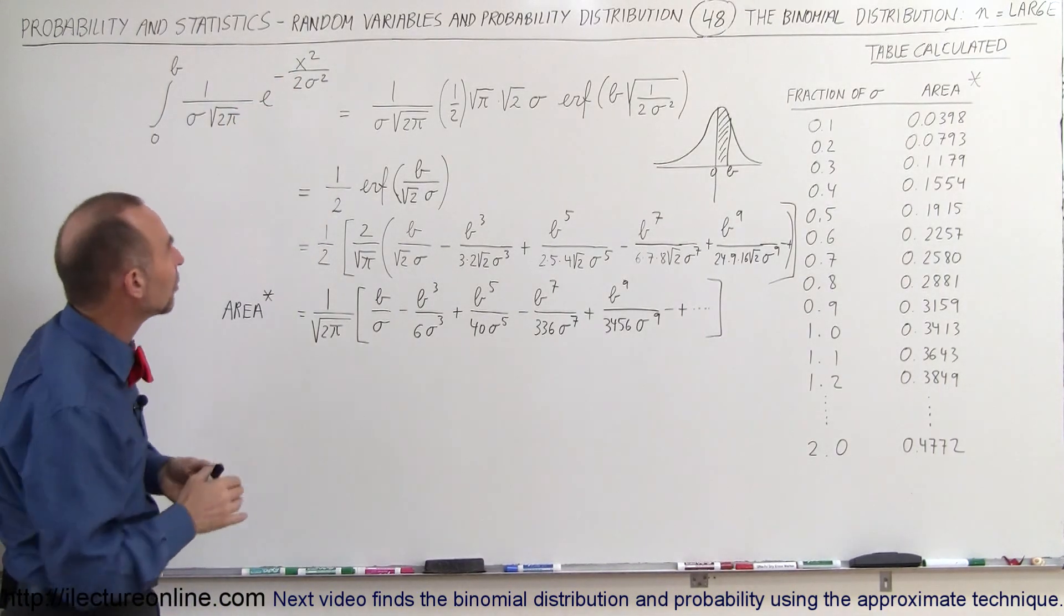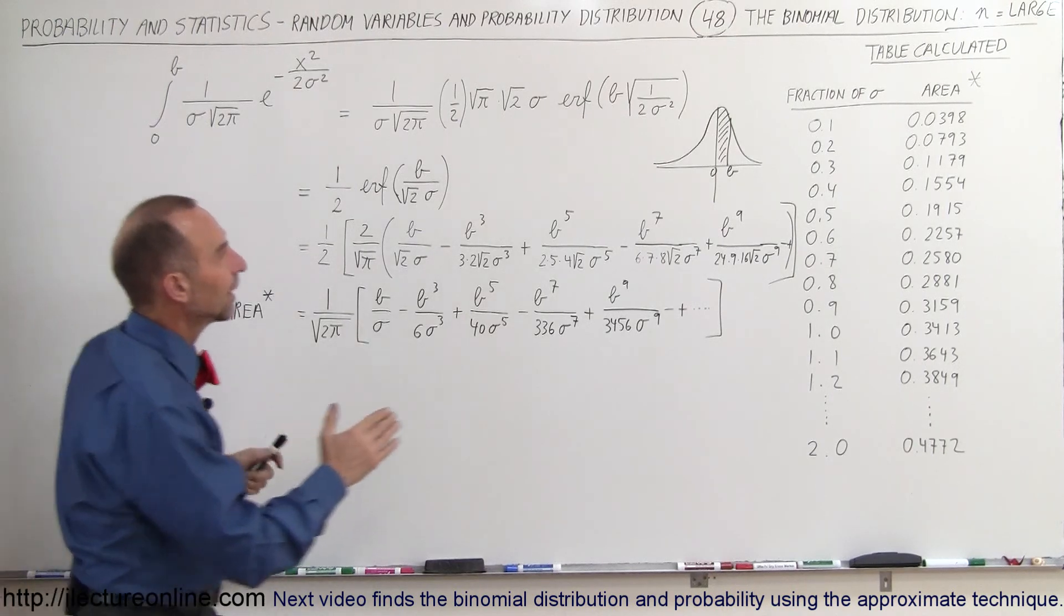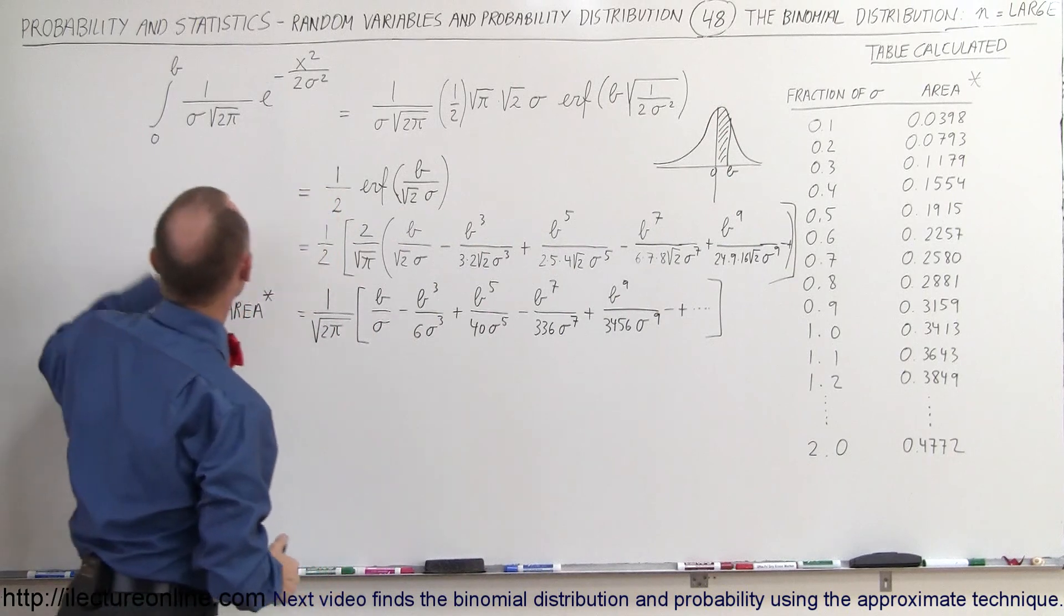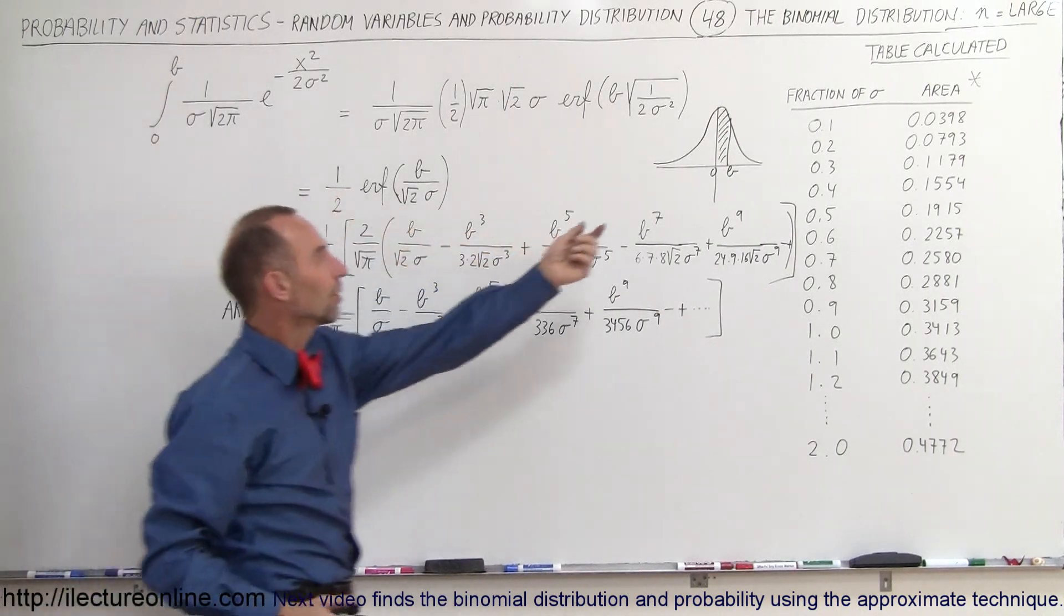Again, sigma is the standard deviation. So if you want to find the area underneath this curve, we have to integrate that function from zero to B, and that will give us the area underneath the curve right here.